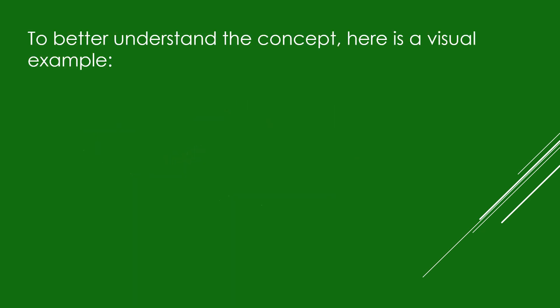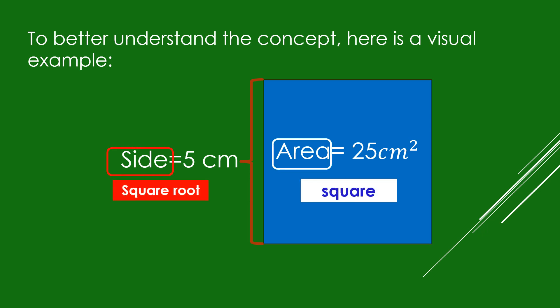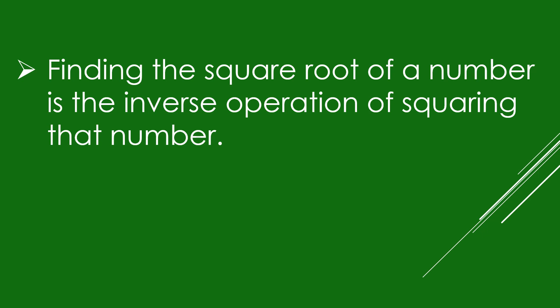To better understand the concept, here is a visual example. A square with a side of 5 cm has an area of 25 square cm. The square is the area, and the square root is the side. Finding the square root of a number is the inverse operation of squaring that number.